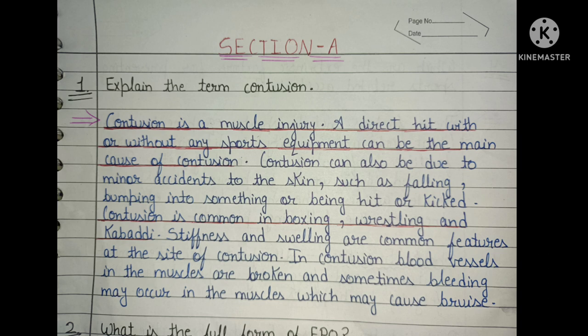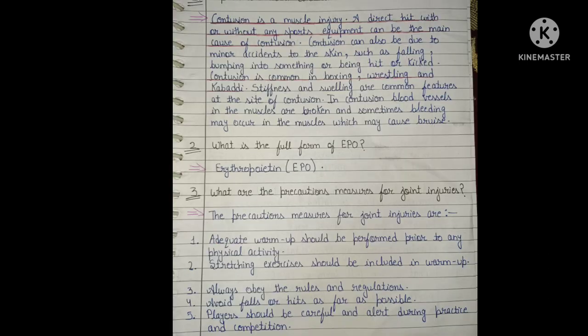Contusion is common in boxing, wrestling, and combat sports. Stiffness and swelling are common features at the site of contusion. In contusion, blood vessels in the muscles are broken and sometimes bleeding may occur in the muscles, which may cause bruising.